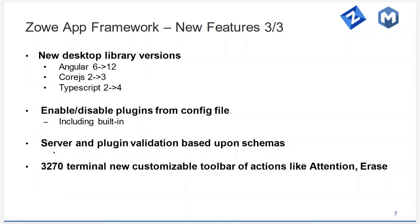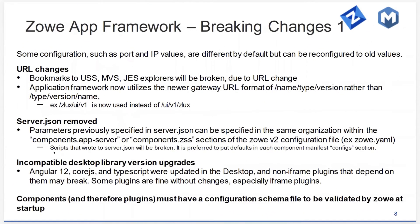All server configuration can now be validated using those schemas. And finally, a new feature in the desktop: the 3270 terminal now has a little toolbar at the top with default actions like attention and erase, but it's customizable — you can add pretty much whatever little macro you want. Now moving to the more disruptive changes: the big thing about going from version 1 to version 2 is it's a time to make the big changes needed to last us for the next two years.